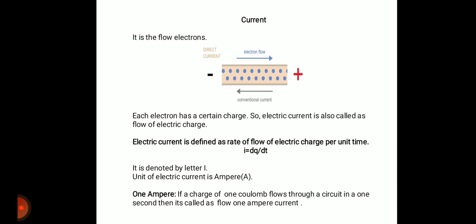What is one ampere? If a charge of one coulomb flows through an electric circuit in one second, it is called a flow of one ampere current. Electric current is the flow of electrons; since each electron has a certain charge, electric current is the flow of electric charge. The rate of flow of electric charge is called electric current, expressed as I = dq/dt.